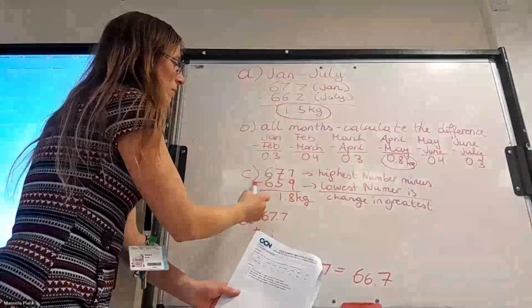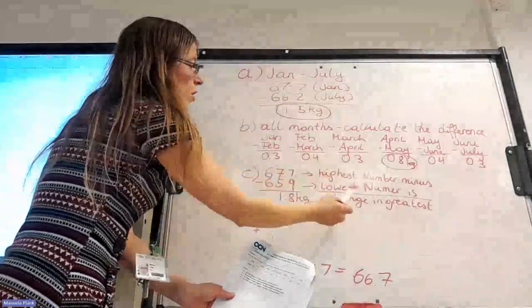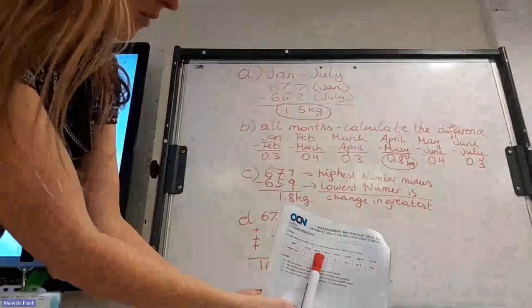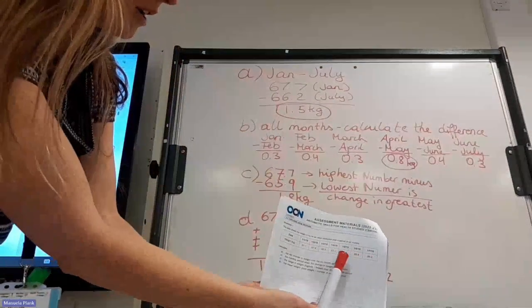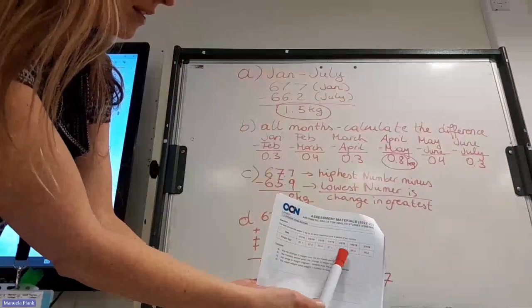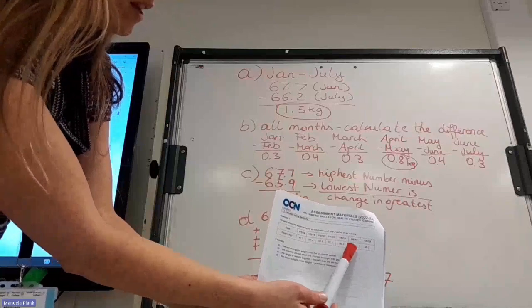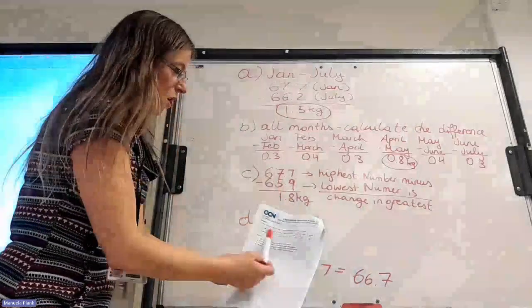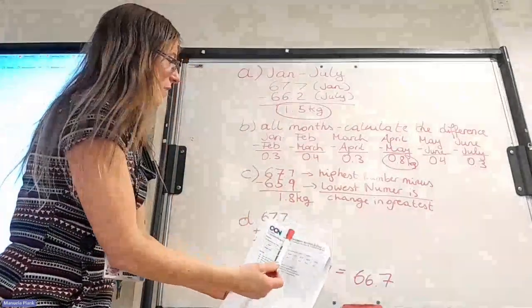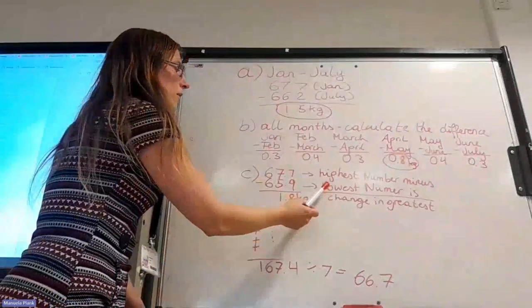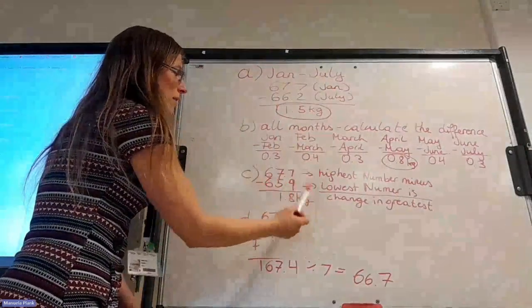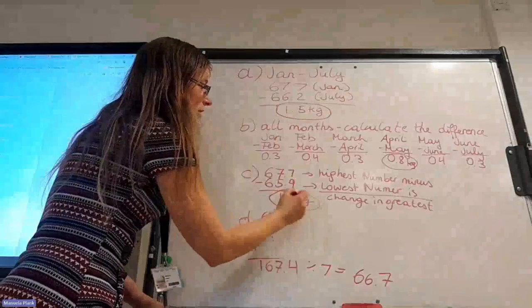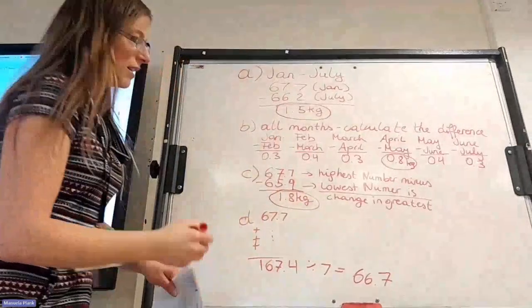Then we minus the lowest number. So we're also going to look in our table again, which is the lowest number. So we have some with 66. That's still not very low. But then we have one with 65.9, which is the lowest. There is no other number that is smaller than that number. So we figure out the lowest number. Then minus this one is 1.8 kilograms. So that is the change in weight where it is the greatest.